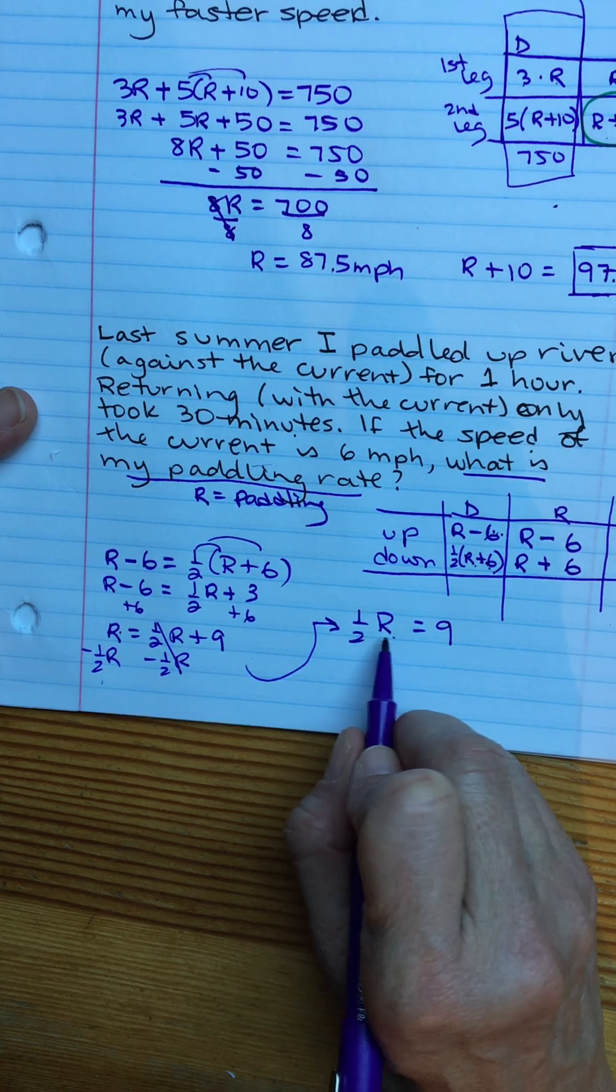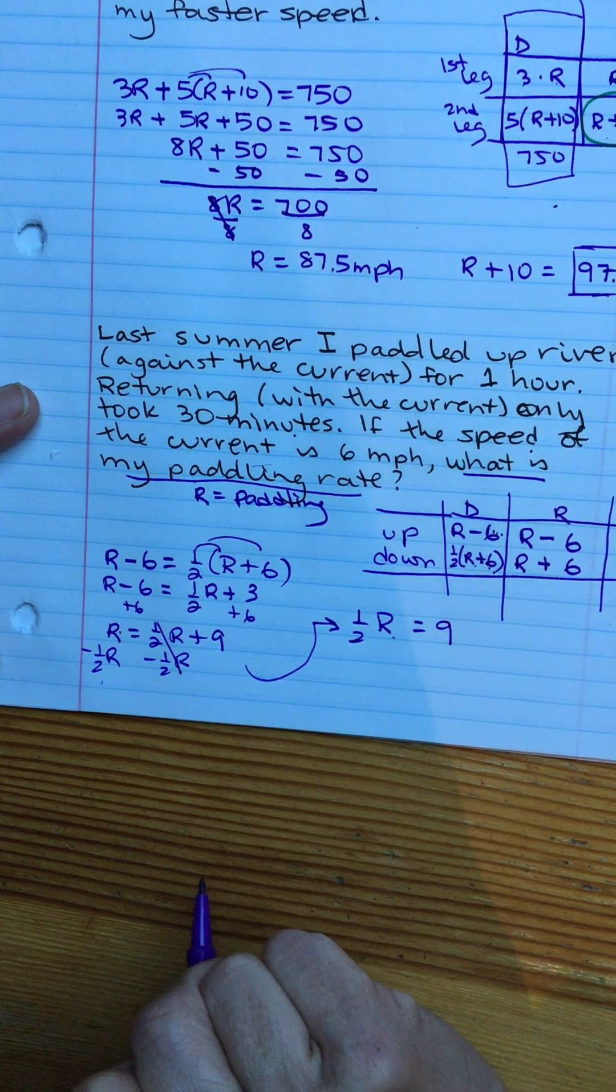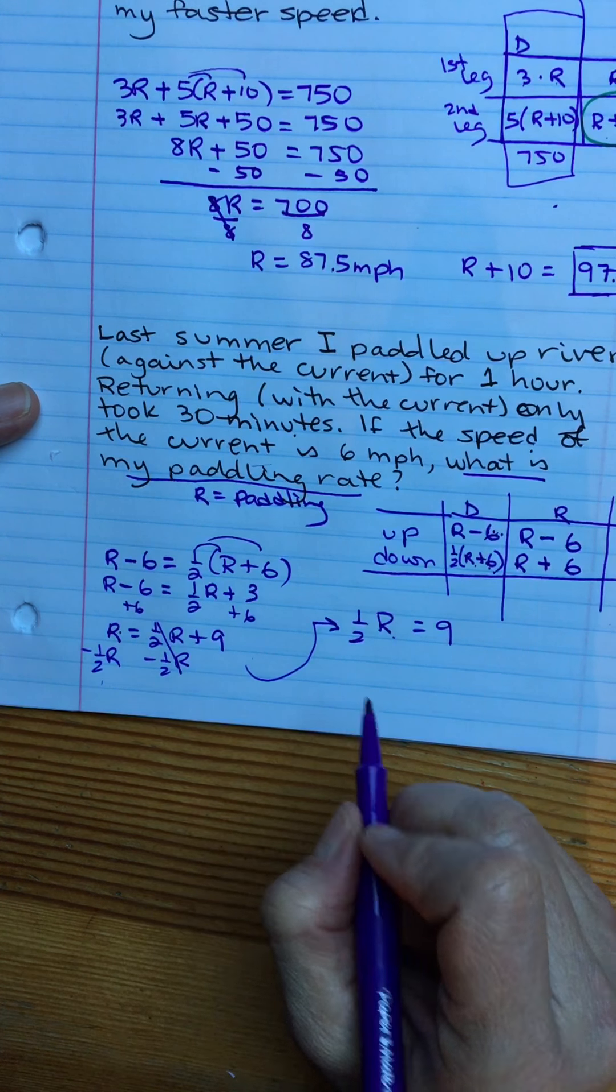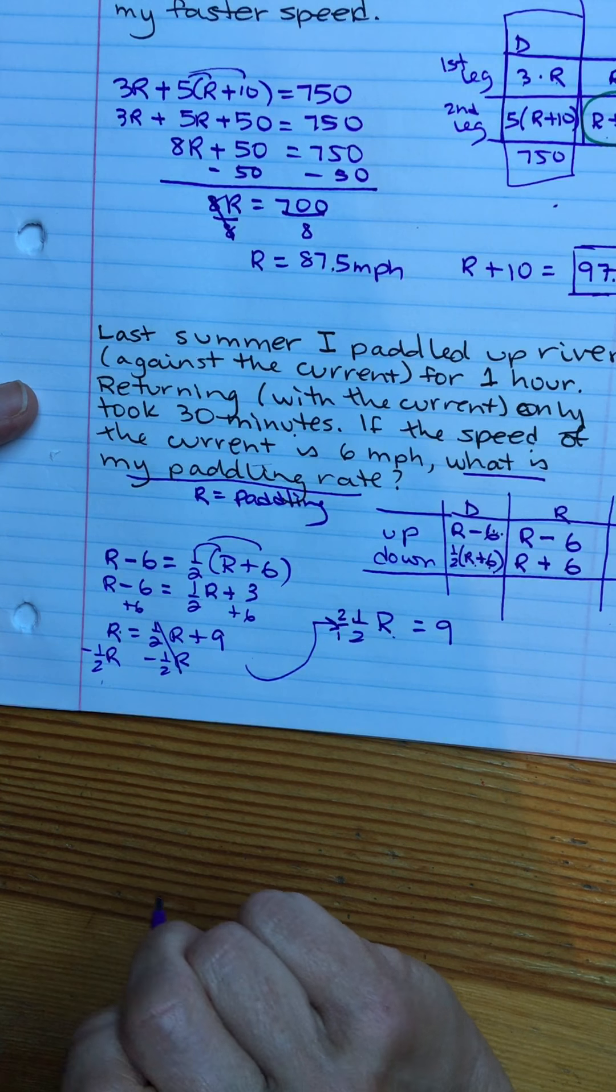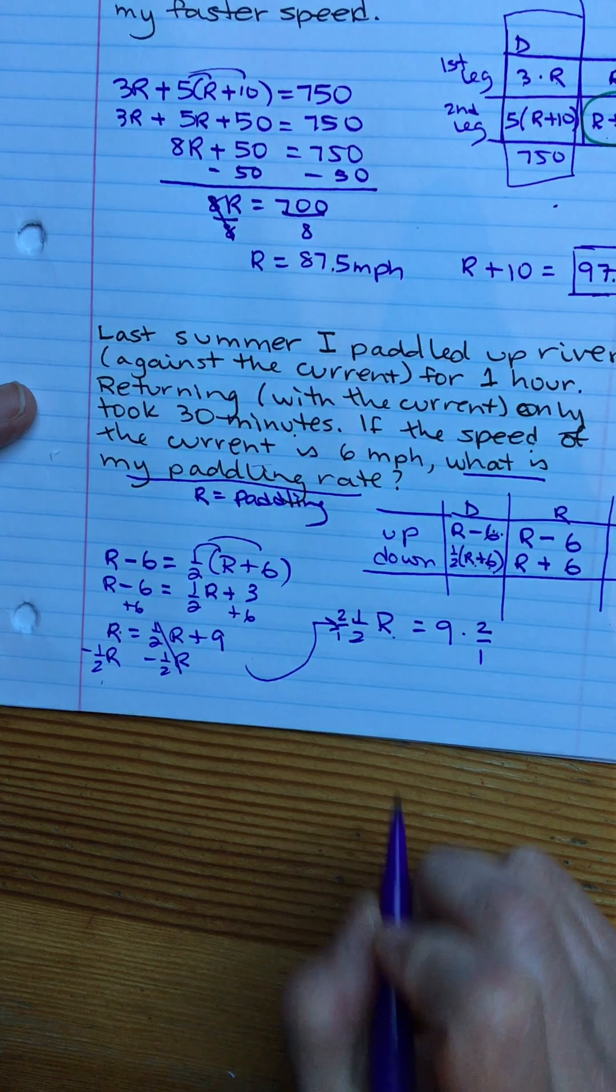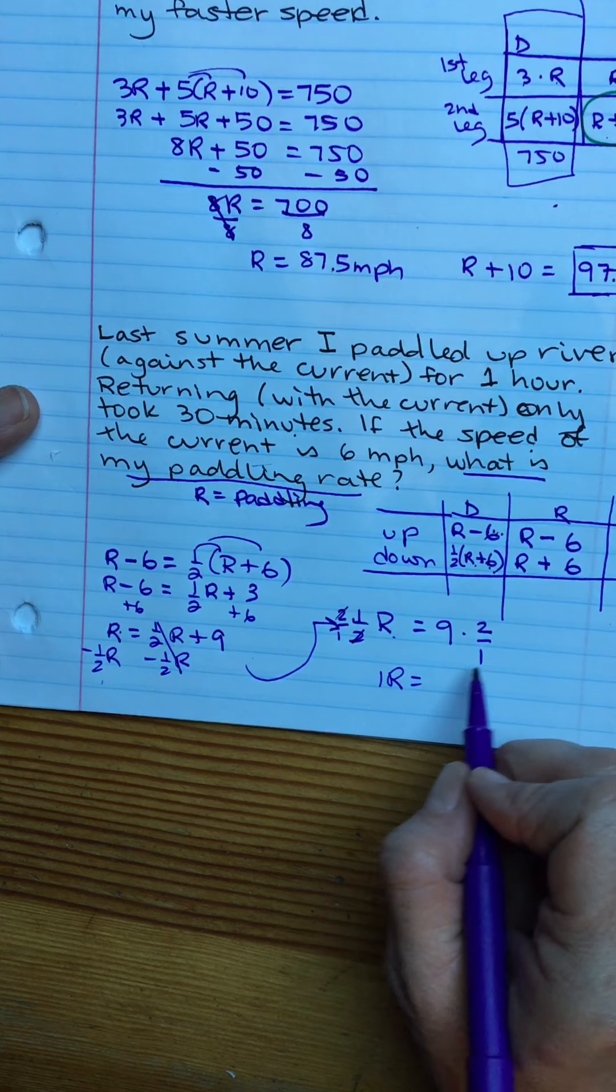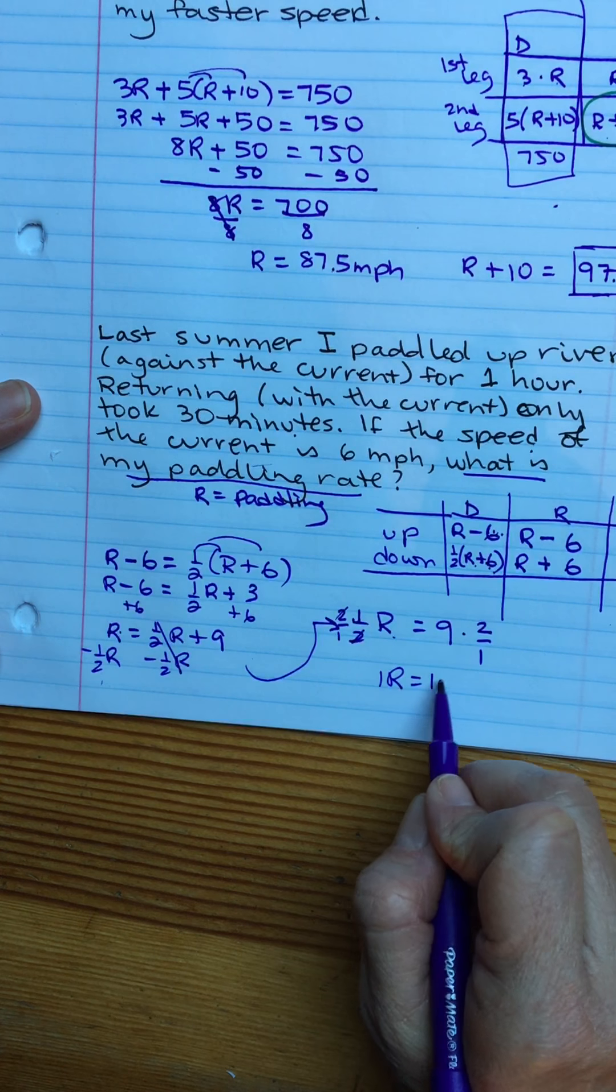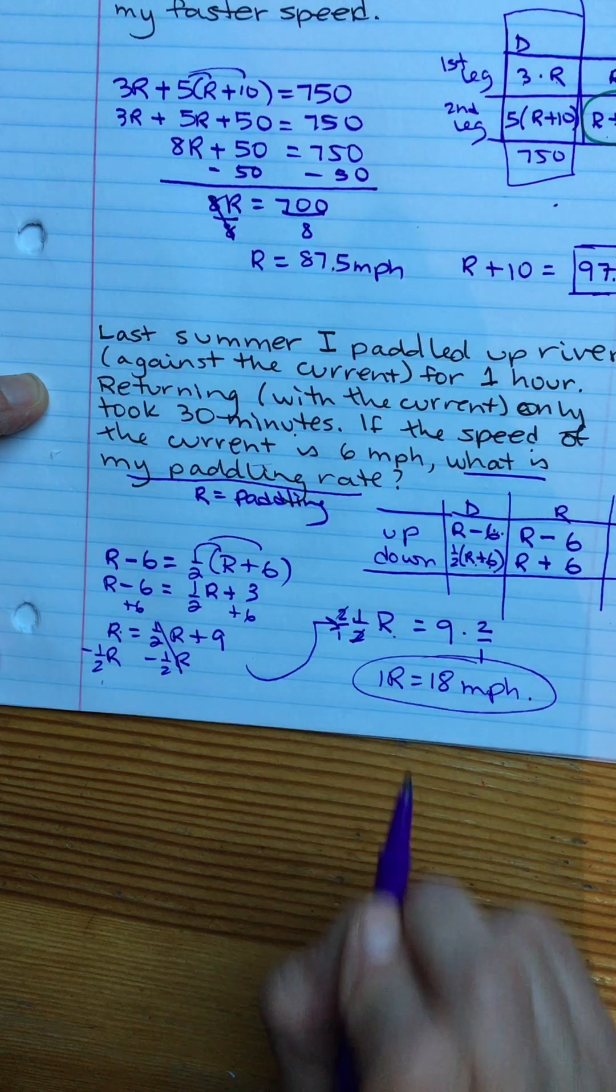And now to get to the R, I need to get rid of the half. So I'm on my last step. To get this coefficient of R to be one, what I'm going to do is multiply by two. So if I multiply the left side by two, I do that to the left. That means I have to do that to the right. So here on the left, the twos cancel. I'm left with one R equals, and I have nine times two. Nine times two is 18 miles per hour. And I promise I do not paddle that fast.